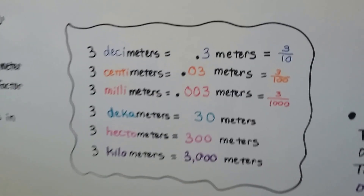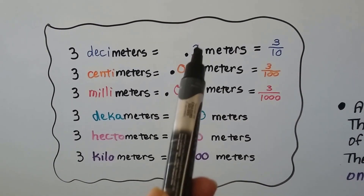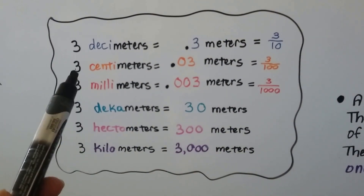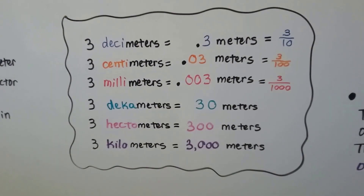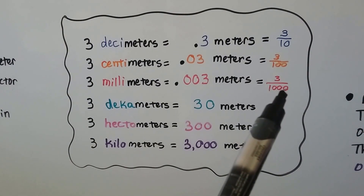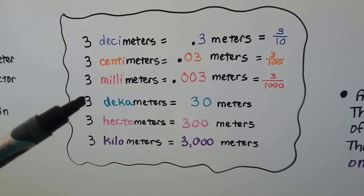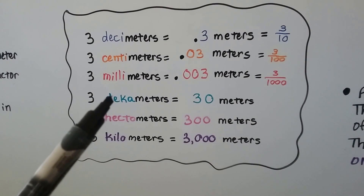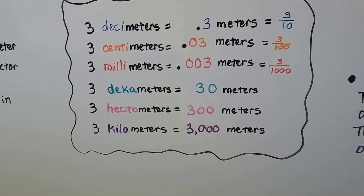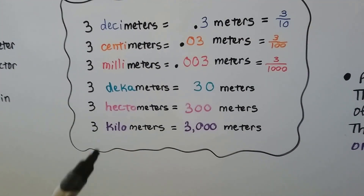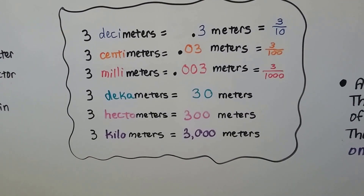Let's use the number three for examples. Three decimeters equals 0.3 meters, because the tenths place is on that side of the decimal point. Three centimeters is 0.03 meters — that's the hundredths place. Three millimeters is 0.003 meters — that's the thousandths place. Going larger: three decameters is 30 meters, because one decameter is 10 meters. Three hectometers is 300 meters. Three kilometers is 3,000 meters.